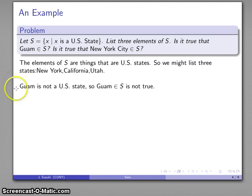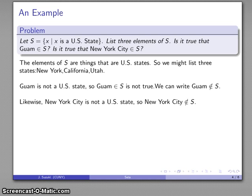Now let's think about that. Is Guam in this set? Well, Guam is not a U.S. state. So it does not meet the membership requirements of this set. So Guam in S is not true. So how can we write that? Well, we can write Guam element of S not using that slash. Likewise, New York City is not a U.S. state. So New York City is not an element of the things that are U.S. states.